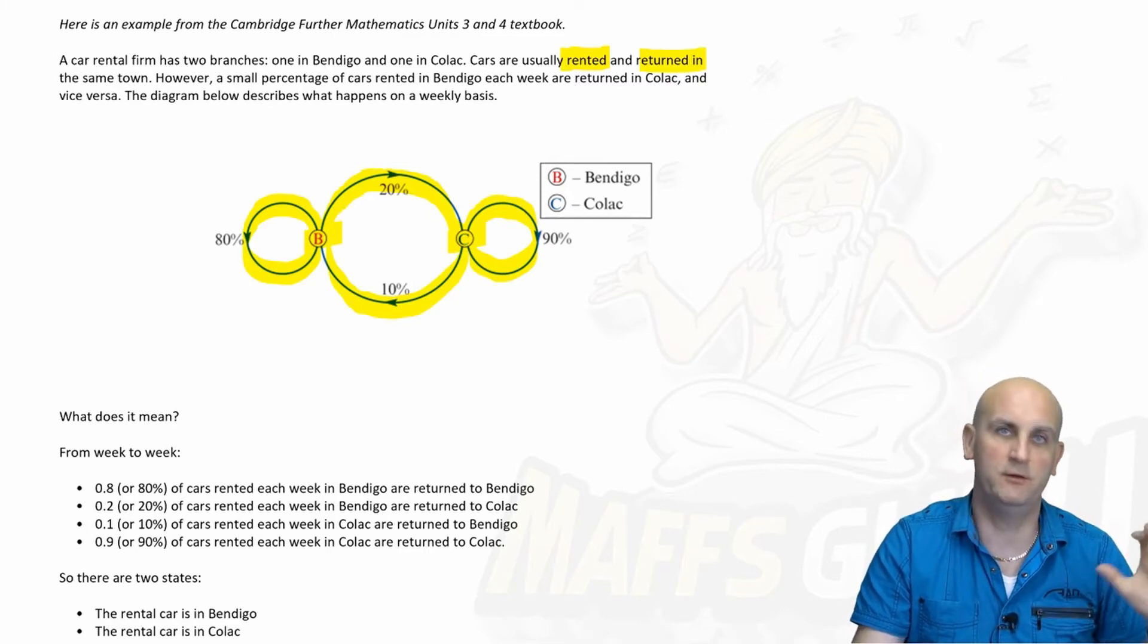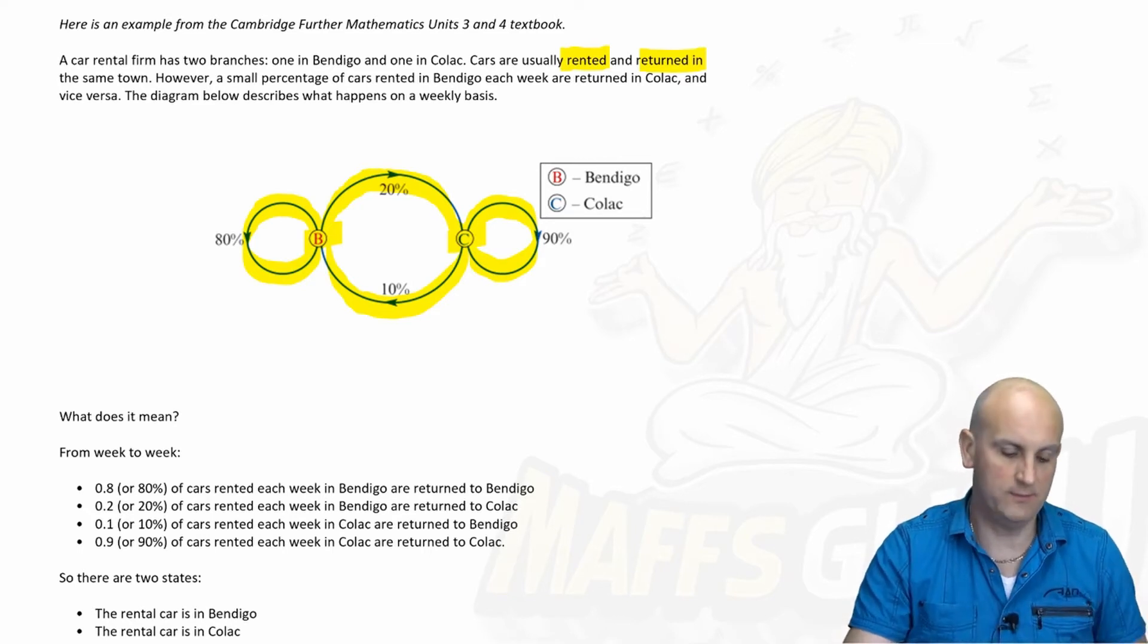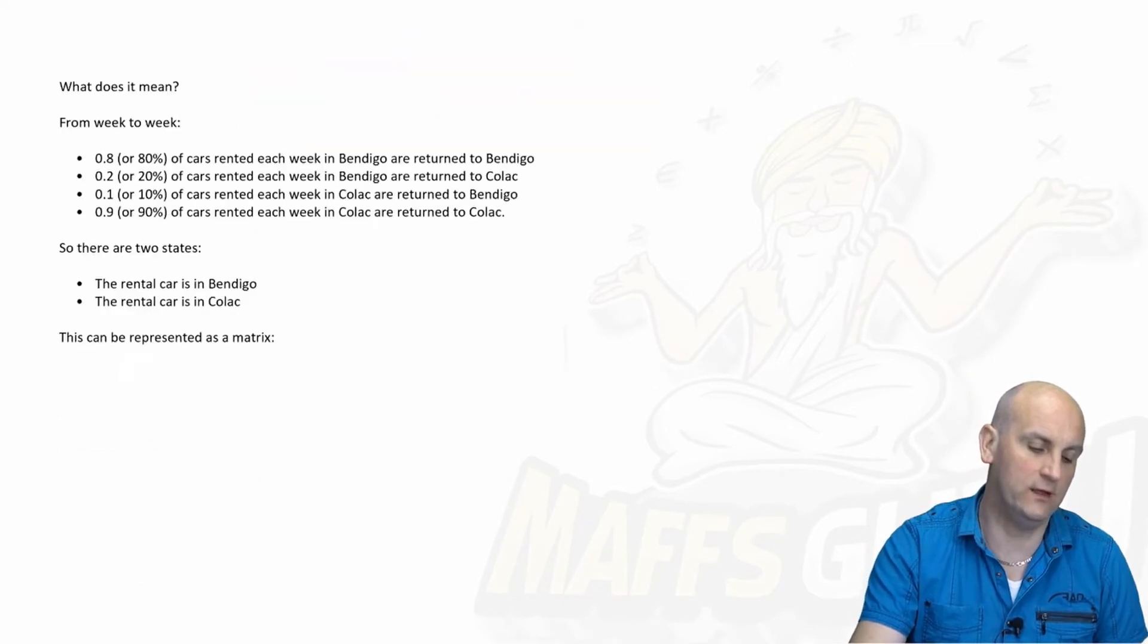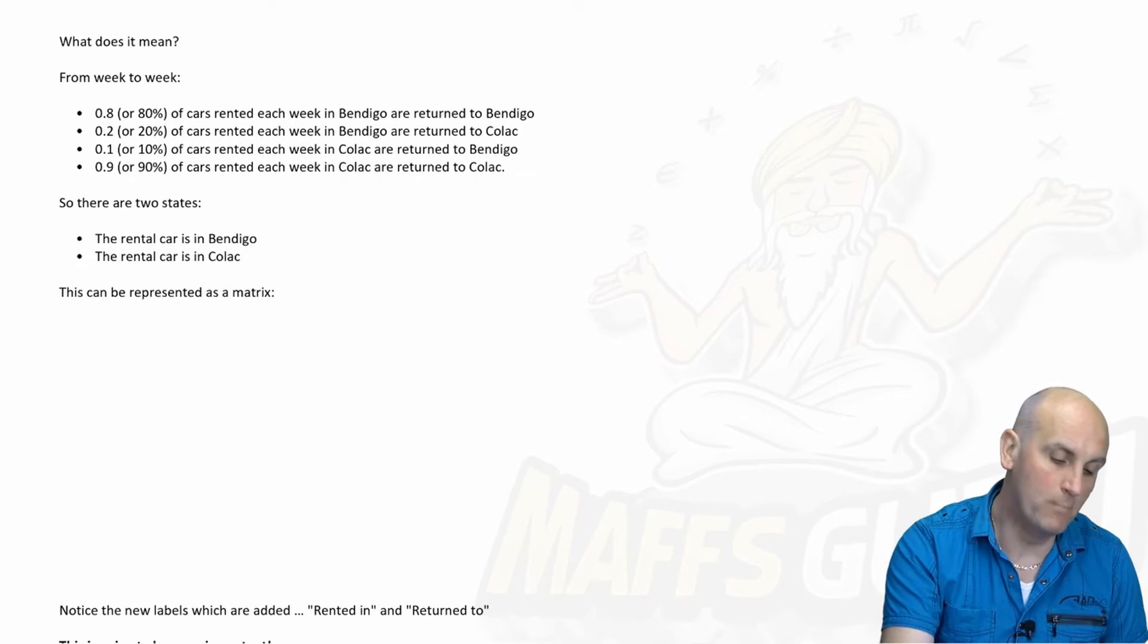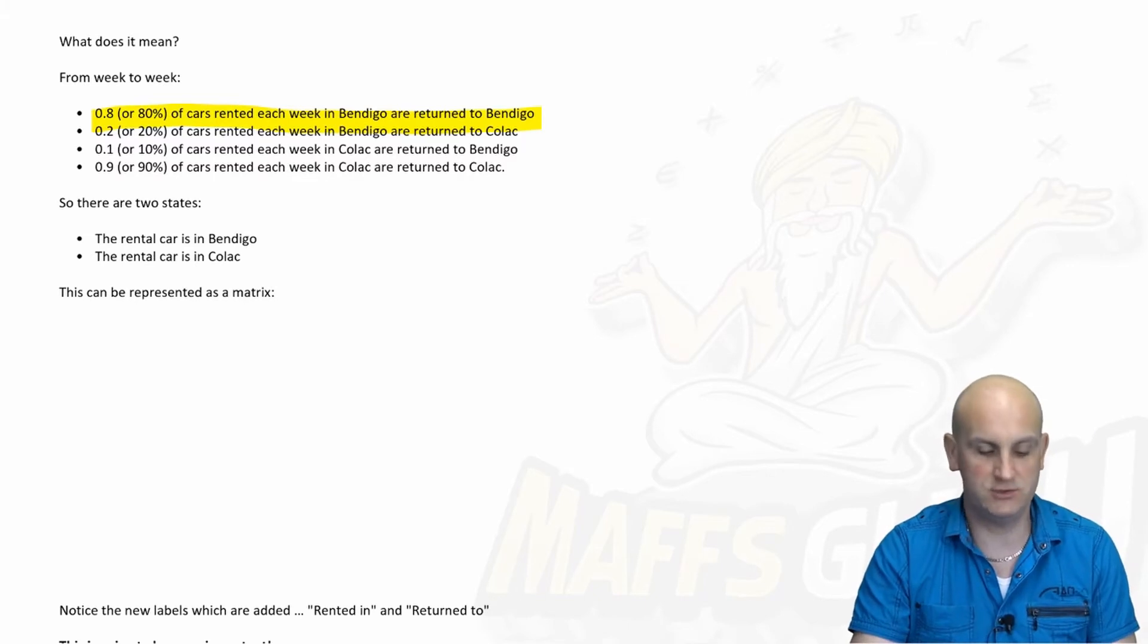And each week, the number of cars in both Bendigo and Colac is going to change. Again, that's going to come up a little bit later on. So having decoded what that diagram means and putting it into more of a worded situation, we can now turn this into a transition matrix.